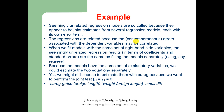Because the models have the same set of explanatory variables we could estimate the two equations separately, yet we might still want to estimate them with the SUREG command because we want to perform a joint test that beta-1 and gamma-1 are equal to zero. We use the SUREG command: price is dependent on foreign, and then we have another equation where weight is the dependent variable regressed on foreign and length, with an option for small-sample statistics and degrees of freedom adjustment.